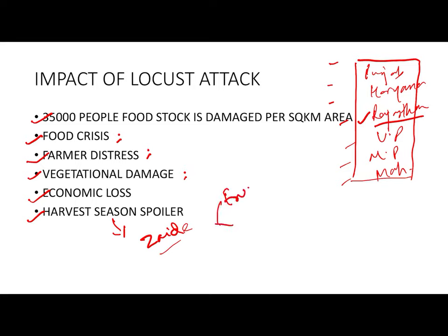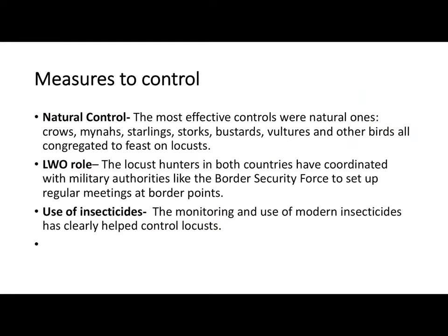In India, the Zaid (summer) season crops — particularly fruits and vegetables — get more damaged, especially mango plantations in the north and western parts of India.